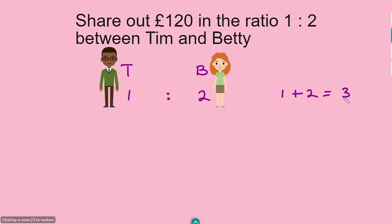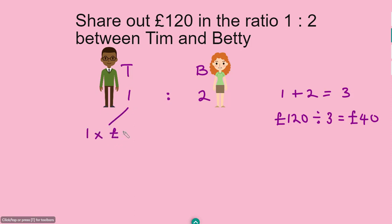We add up the parts: 1 plus 2 gives us 3 parts. We divide 120 pounds by 3, which gives us 40 pounds per part. That means Team gets one lot of 40 pounds, which is 40 pounds, and Betty gets two lots of 40 pounds, which is 80 pounds.